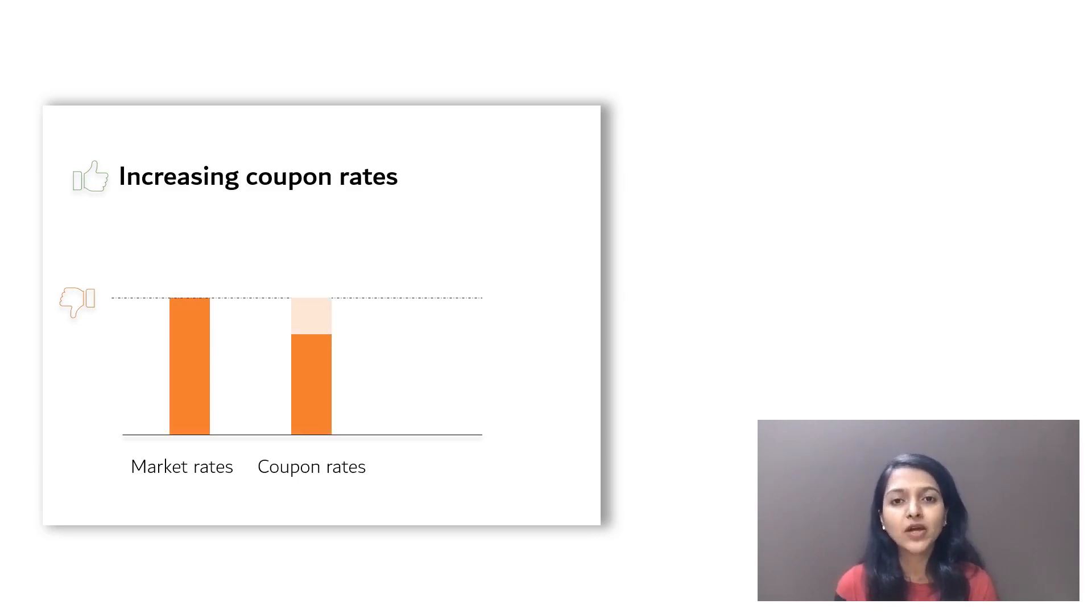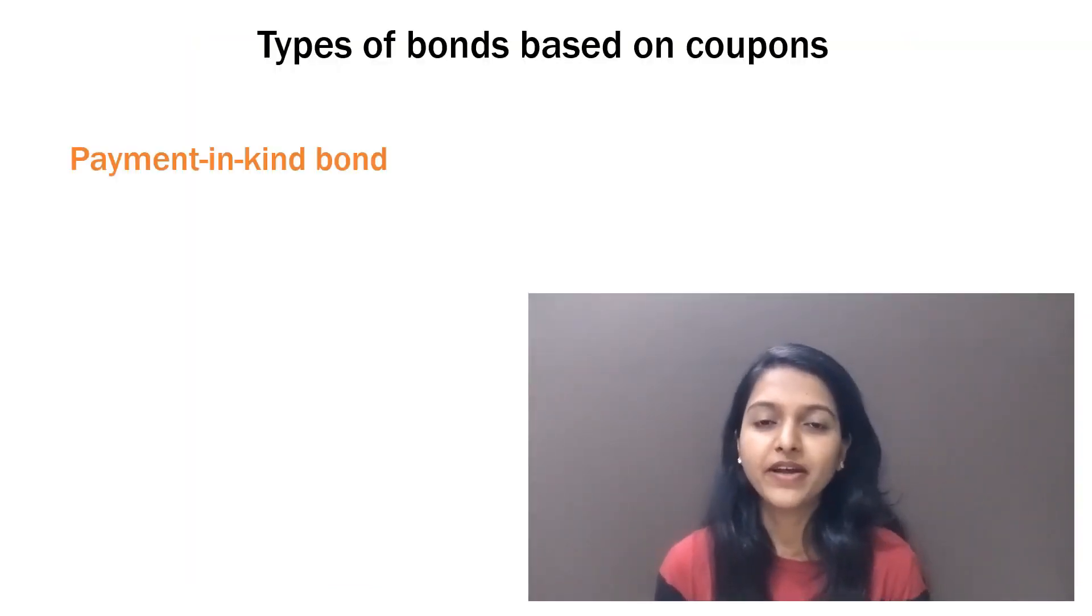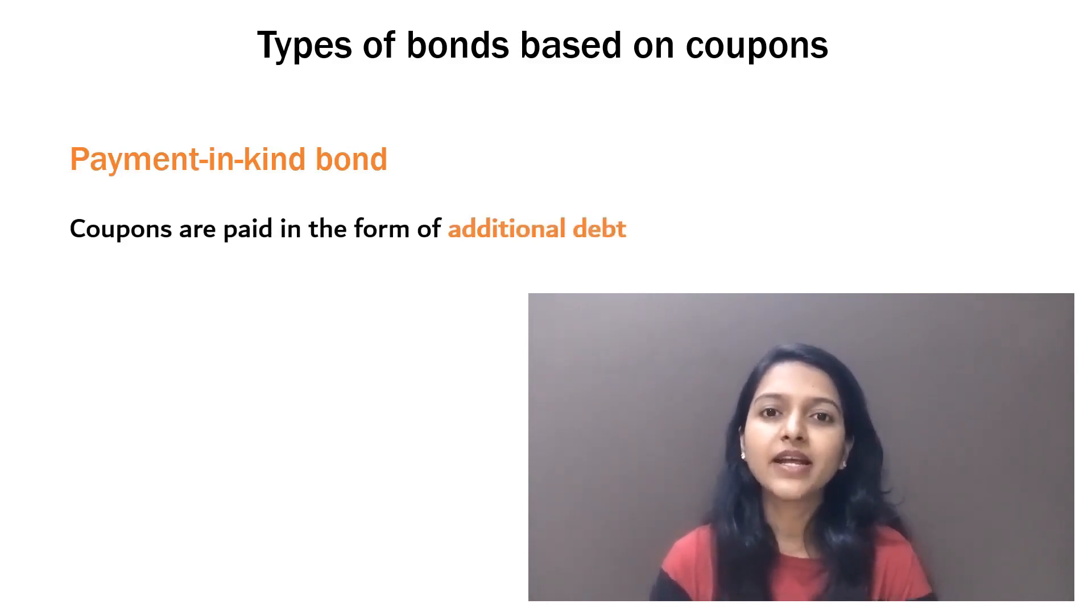Next one is payment in kind bond. Now this is a very different one. So instead of paying coupons in cash, it is paid in the form of an additional debt. We'll understand it with an example.